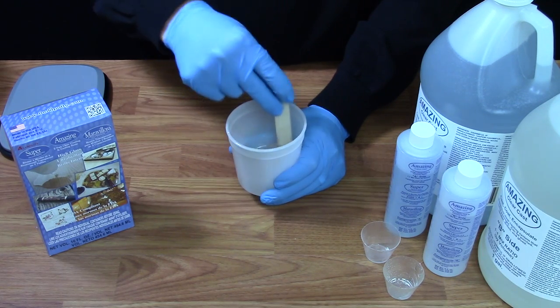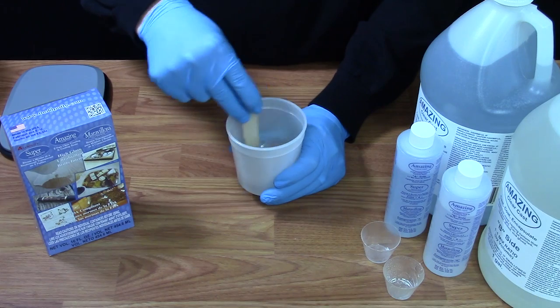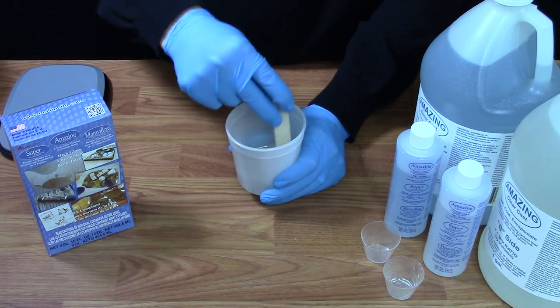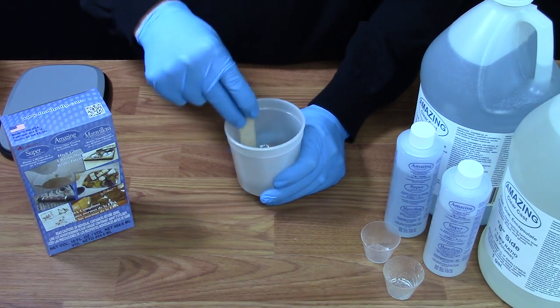While stirring, you should be looking for both of those sides inside your cup to disappear so you don't see any striations between the two sides.